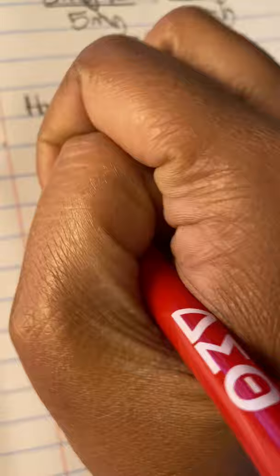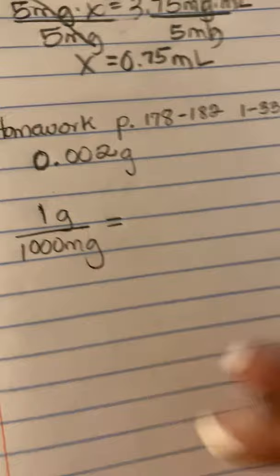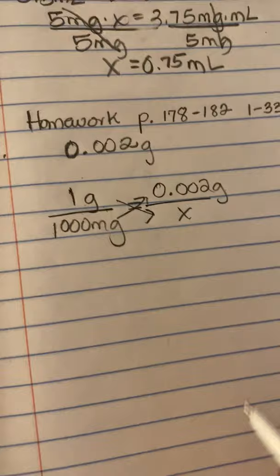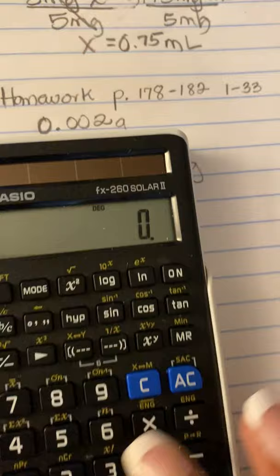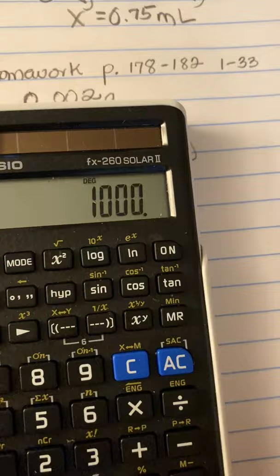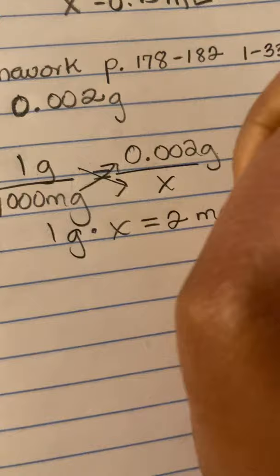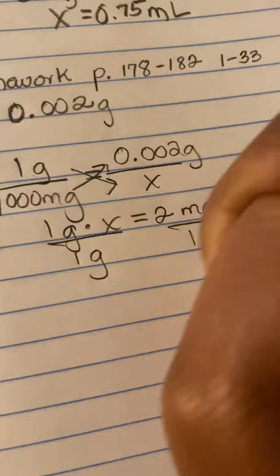One gram is equal to 1,000 milligrams. We're setting up our proportion, converting the grams into milligrams. Since they gave me 0.002 grams, you're going to match your units over X. Cross multiply: one gram times X equals 0.002 times 1,000, which gives me 2. So that gives me two milligrams.